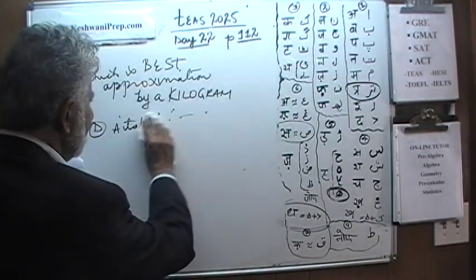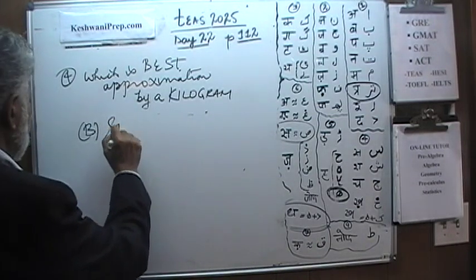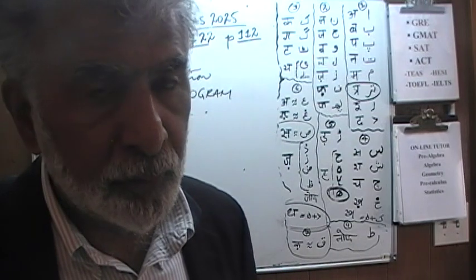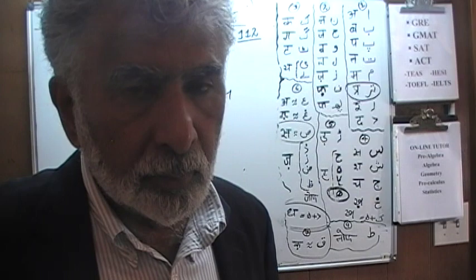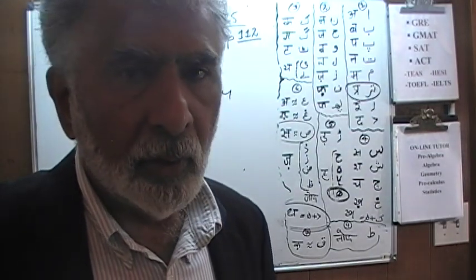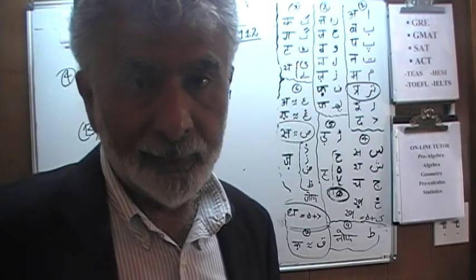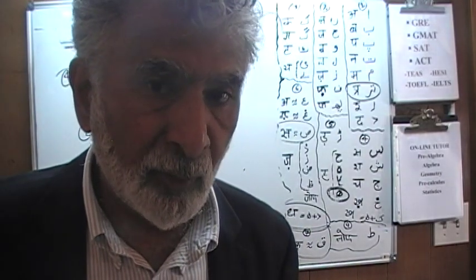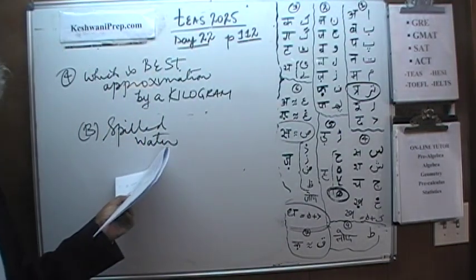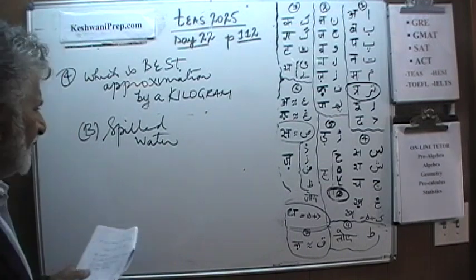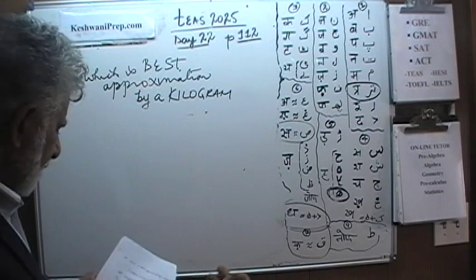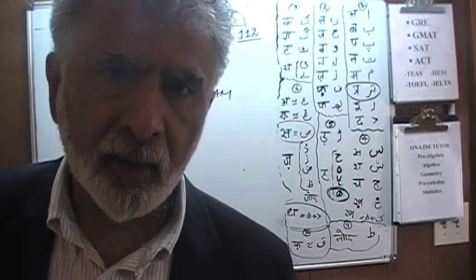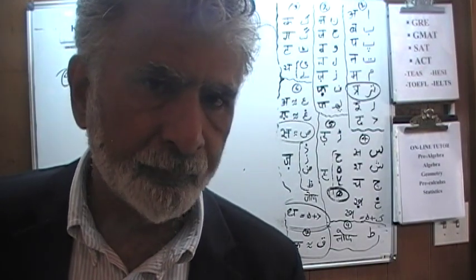Answer choice B says spilled water. Well, water is a liquid — you would use a unit of measurement for liquid such as liters, ounces, or gallons. Not kilograms or pounds. And this particular water is spilled — how are you going to measure the weight of spilled water? To say nothing of the fact that it is liquid. So that answer is wrong.